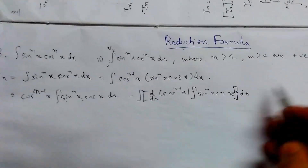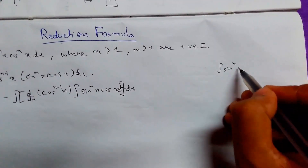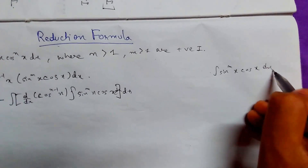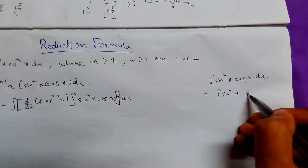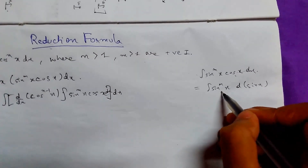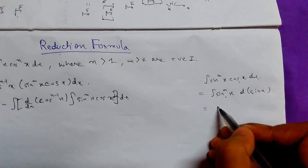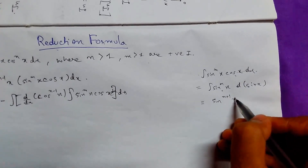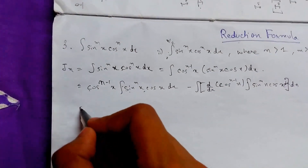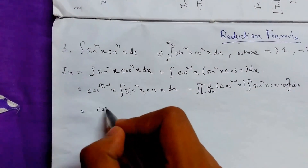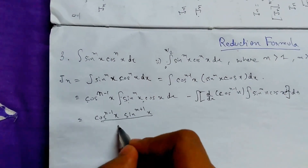Now we need to integrate this. At rough, I am doing this integration. We can write cos(x) dx as d(sin x). Using integration by parts with f(x) and g(x), we integrate. This will turn out to be: cos^(n-1)(x) · sin^(m+1)(x) upon m+1.